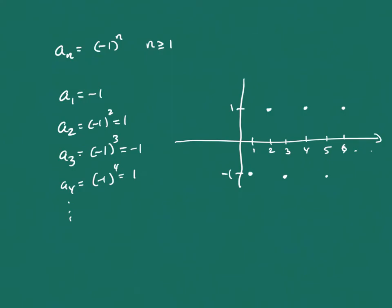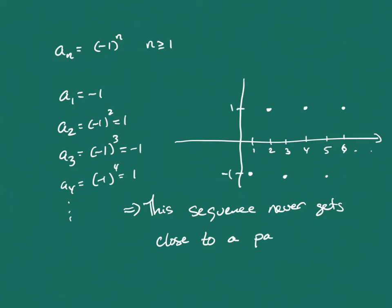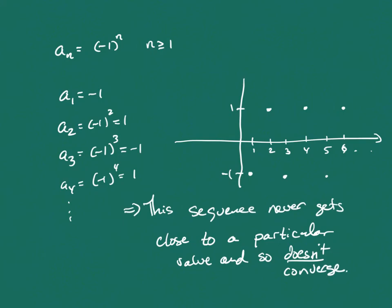This sequence never gets close to any particular value, so it doesn't converge — it diverges. This is another example of a divergent sequence: it doesn't head off to positive or negative infinity, it just bounces between different values, never getting close to anything in particular. It bounces back and forth forever.